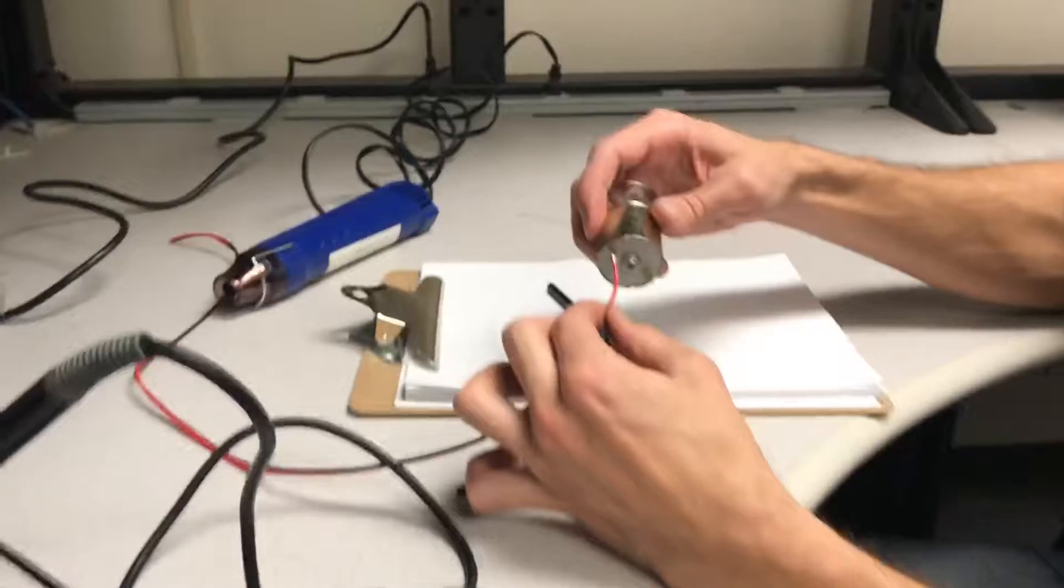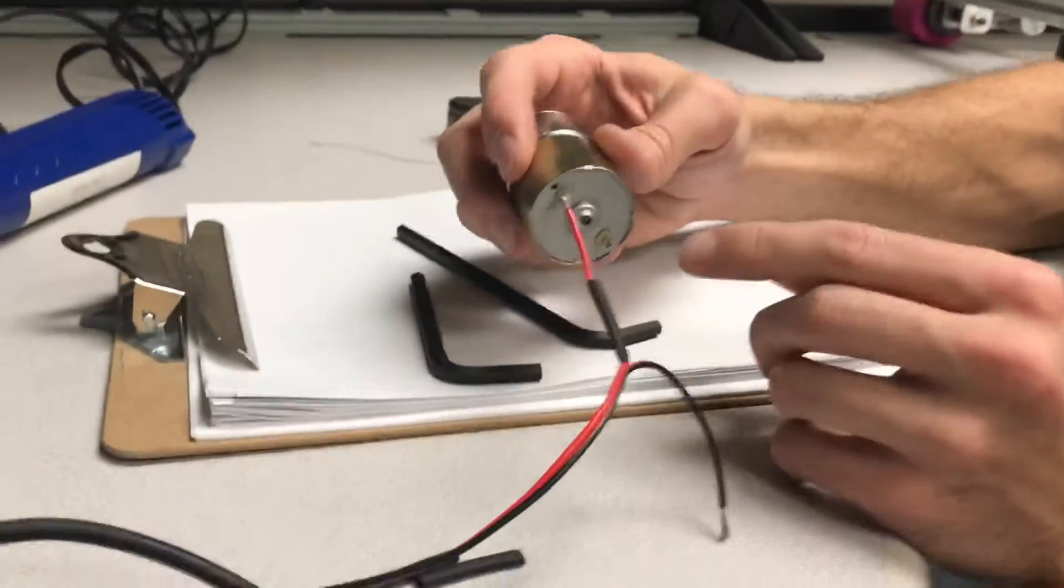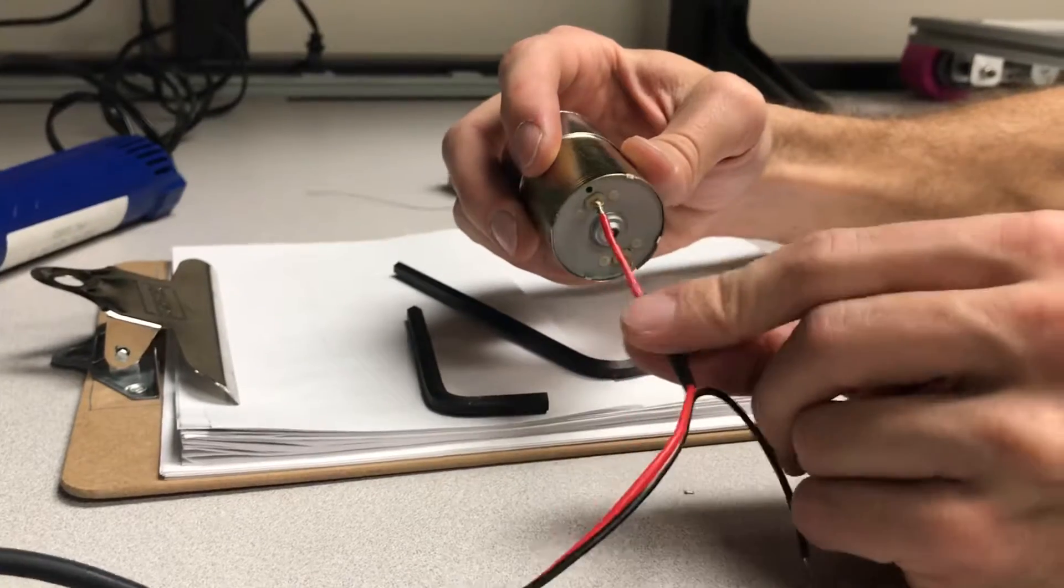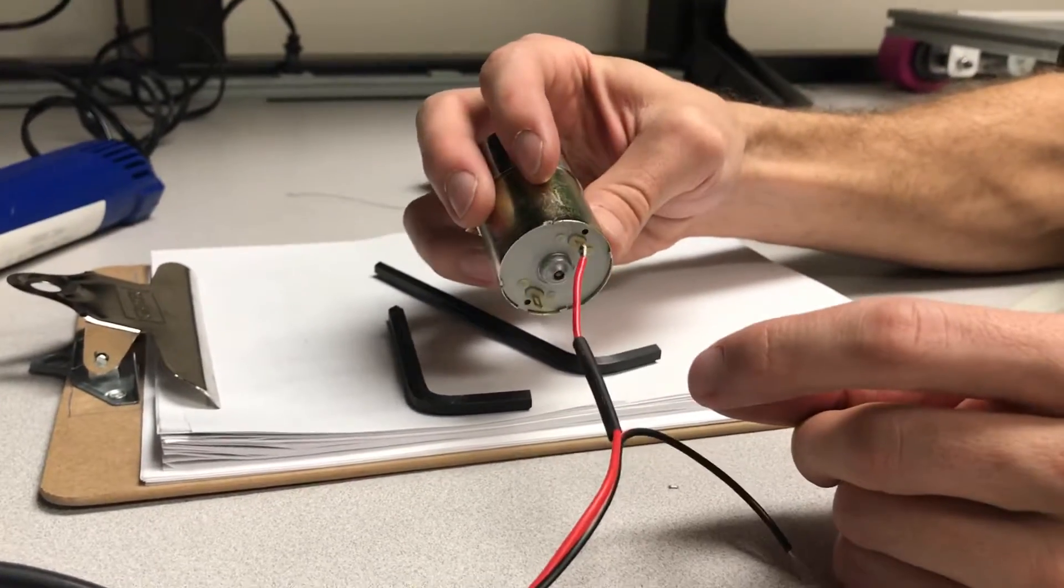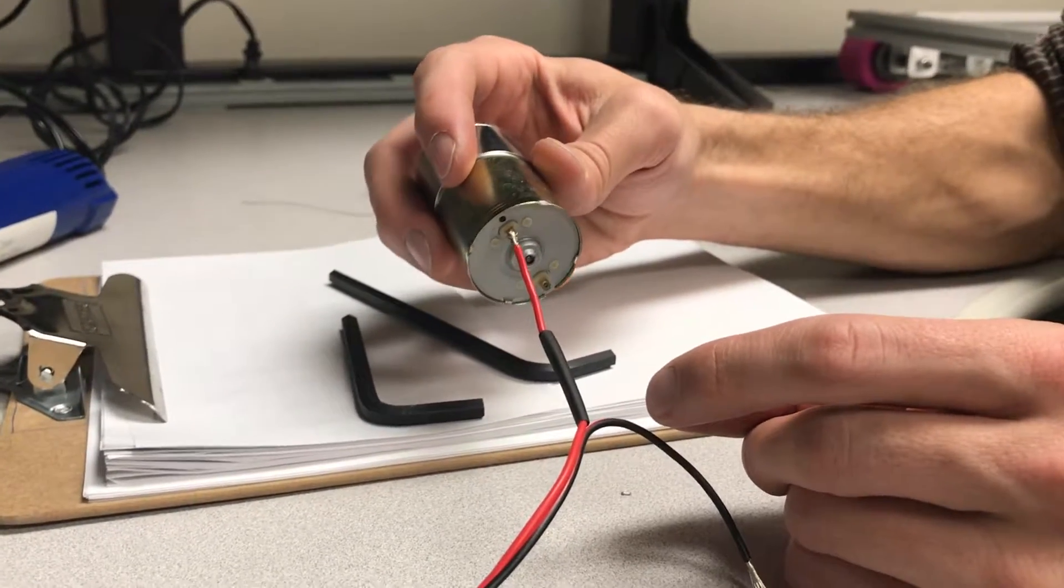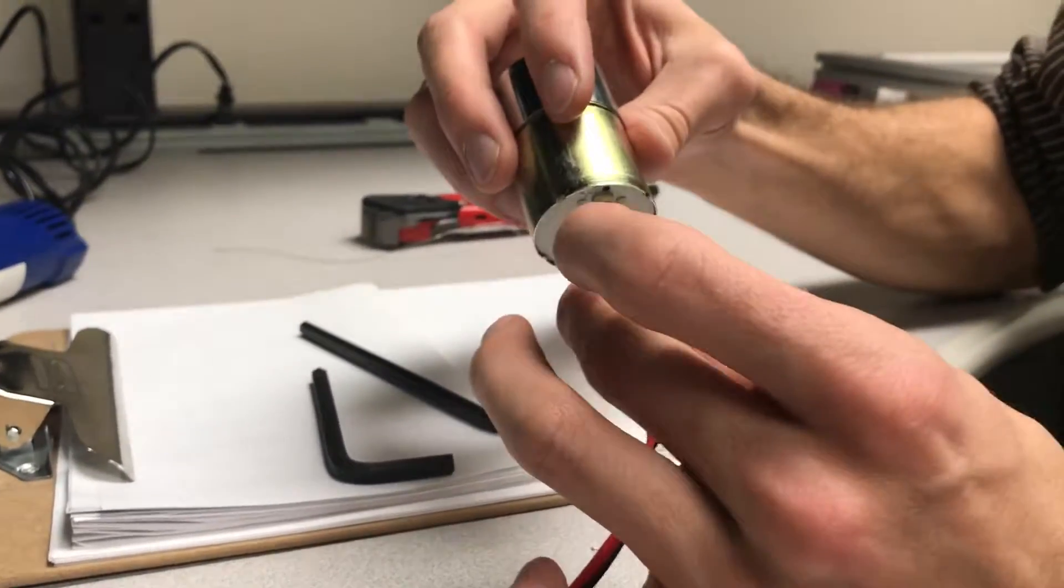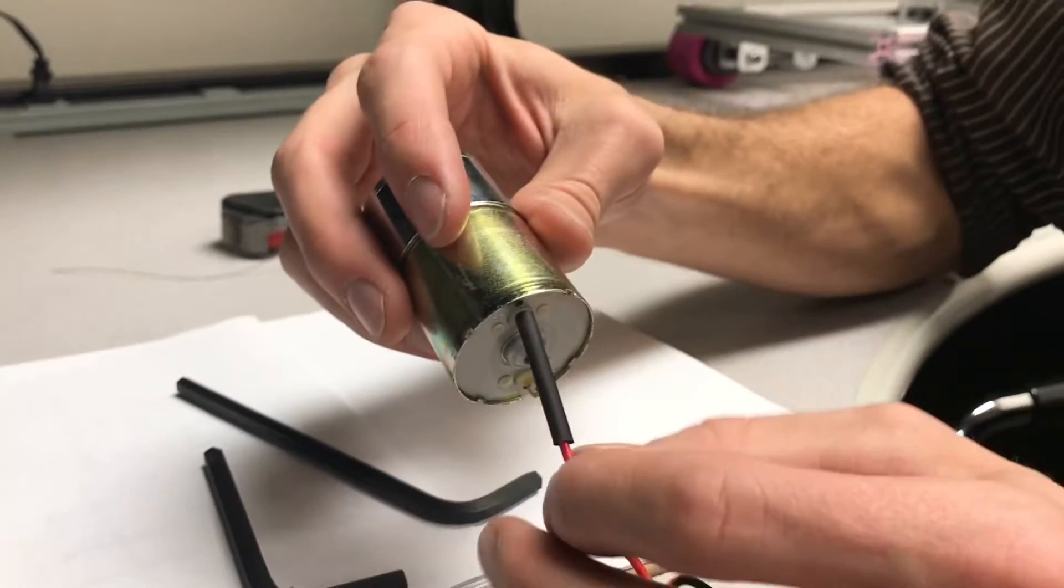Don't slide the heat shrink down until the solder is fairly cool. Otherwise it's going to shrink up while you're passing it over the solder. Go ahead and slide it over.